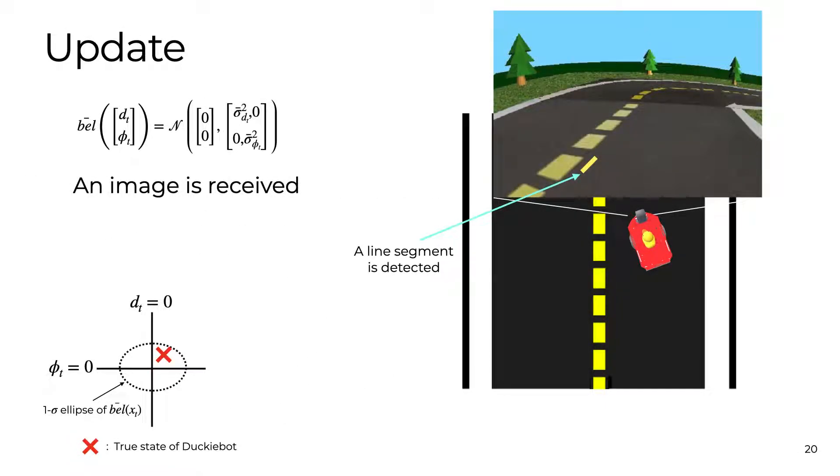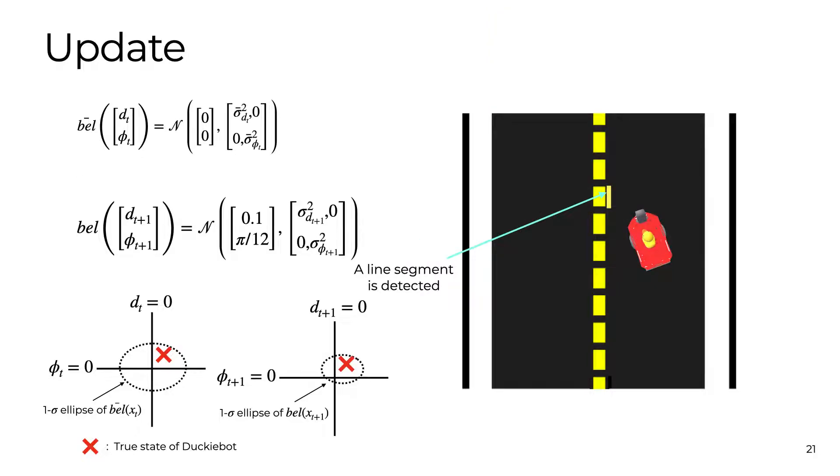Next, we get a camera image and in that image we detect a yellow line. This yellow line tells us something about where we are in the road. We project that line to the ground plane using our homography matrix. This line corresponds to a measurement that we can use to update our estimate and get our posterior belief. In this case, our uncertainty shrinks around the true DuckyBot location.